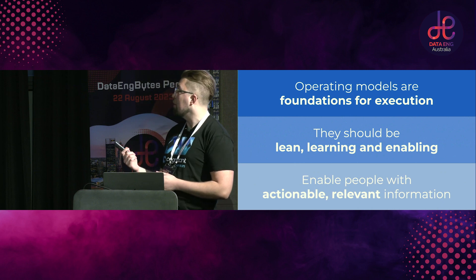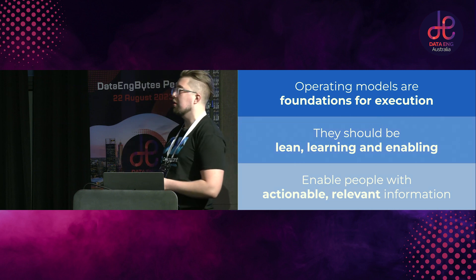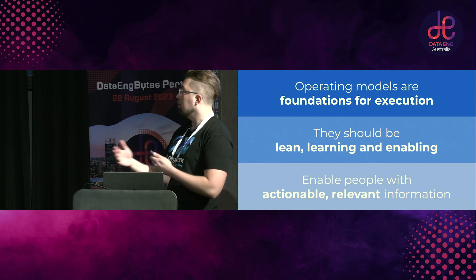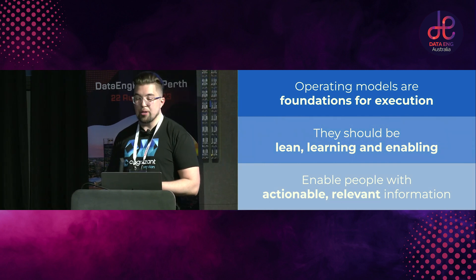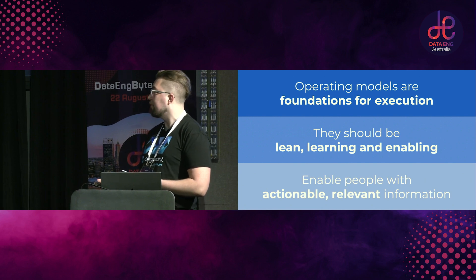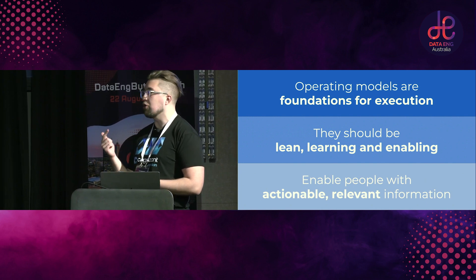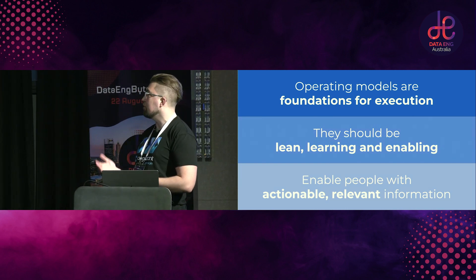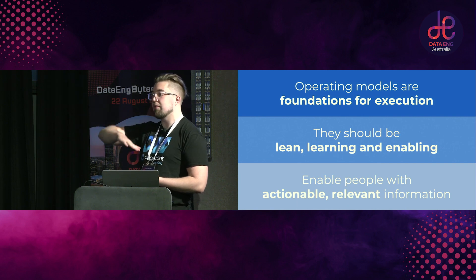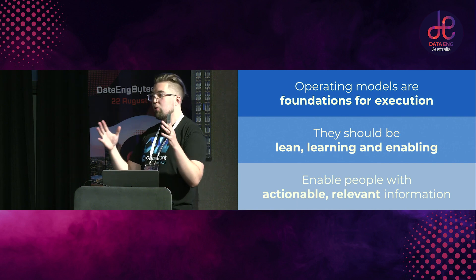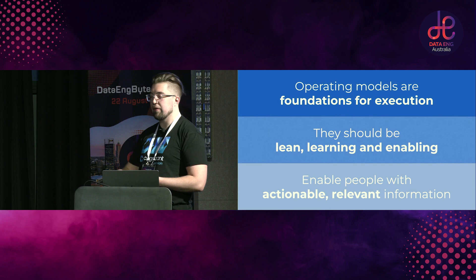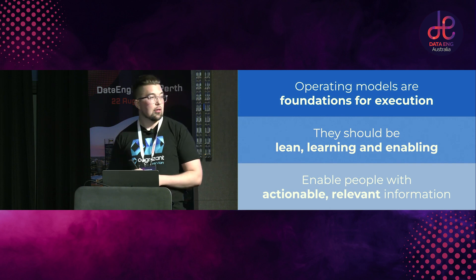Coming back around full circle: operating models are foundations for execution. They're about enabling you to take many bets and be able to deliver innovation out to market, while also providing economies of scale and defining what that differentiation is. They should be lean, learning, and enabling — you really want to make sure you're open for feedback, doing just enough, and focusing on helping people go faster, not just trying to control everything. And the last is enabling people with actionable, relevant information. Those different levels are for different audiences — by design. You can't build one thing that's everything to every person. Instead, iteratively build out more and more detail to fulfill what people are actually looking for.